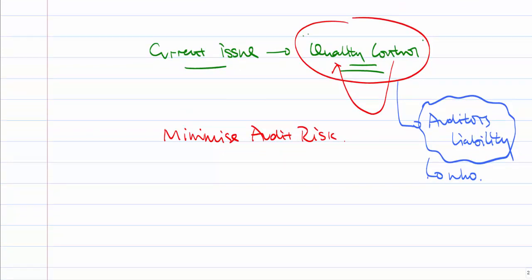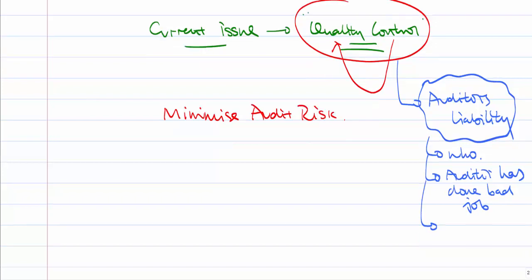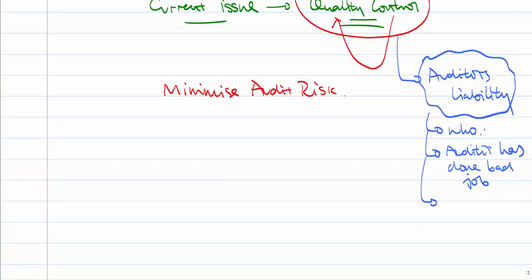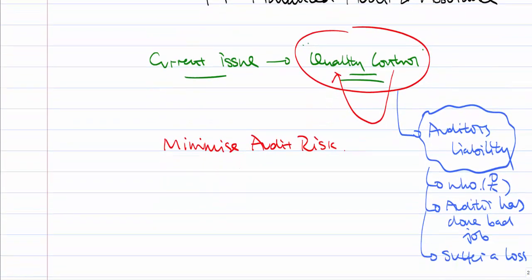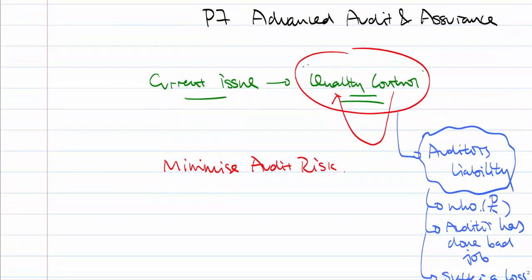The auditor will suffer liability if they know who will use the service — for example, who will use the audit reports to make their investment decisions — and the auditor has done a bad job, meaning they did not stick to the International Standards on Auditing. As a result, that particular someone, for example the investor, will suffer a loss from relying on our opinion, and the auditor would bear that liability.